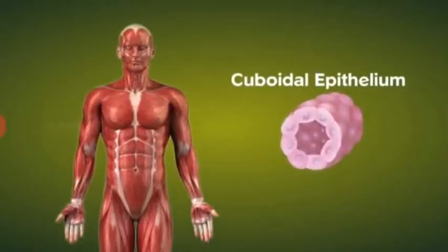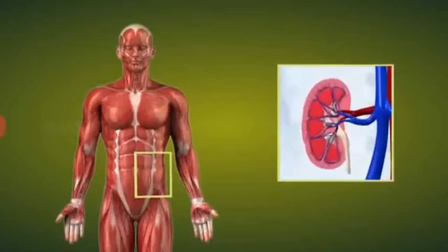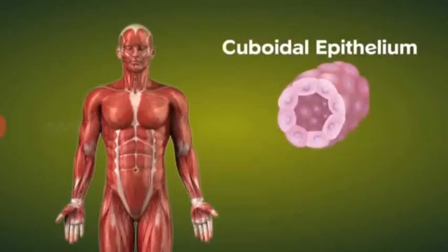Cuboidal epithelium aids in absorption and provides mechanical support. It forms the lining of kidney tubules. It is shaped like a cube.